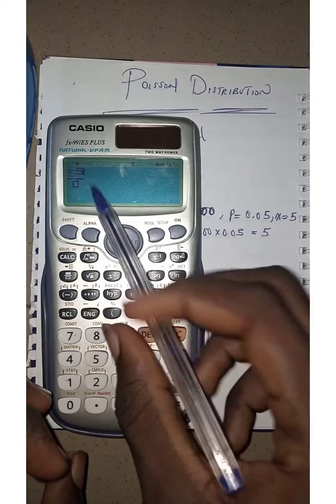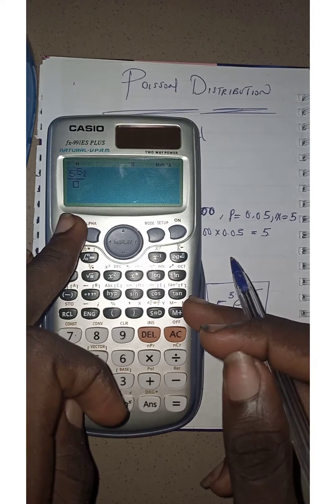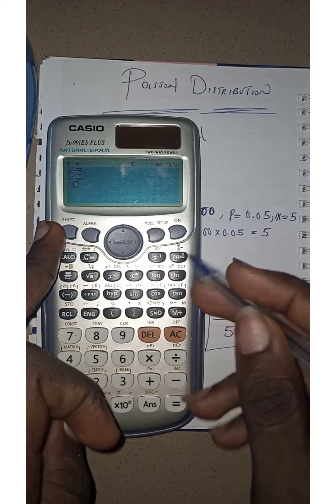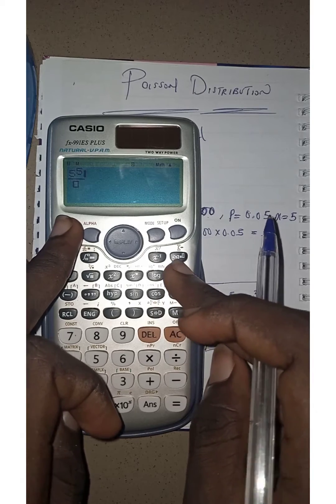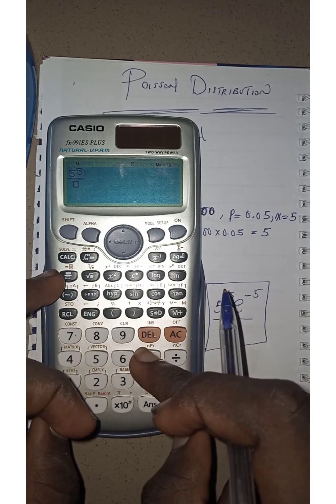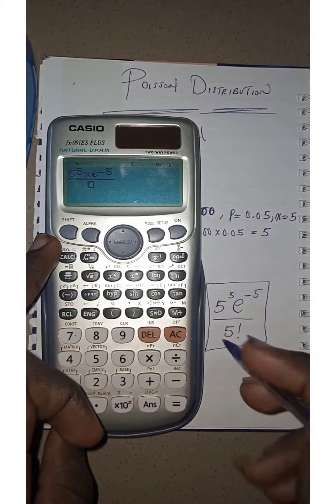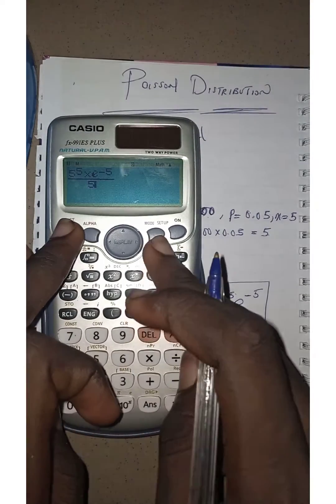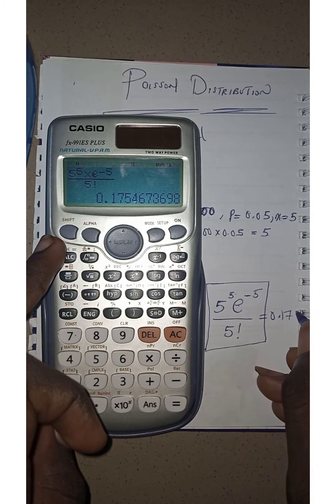Then I need to make sure that this blinking light has to come down. I press the right arrow. I have exponential sign, shift and link. So all I'll just need to do here is I multiply, then press shift and link, minus 5, come down, then 5 factorial. Then the result gives us 0.175.